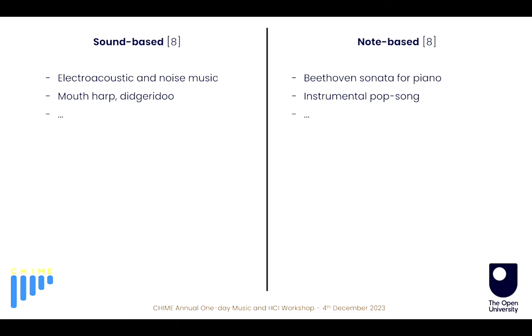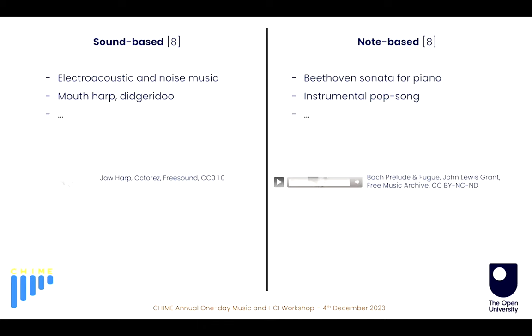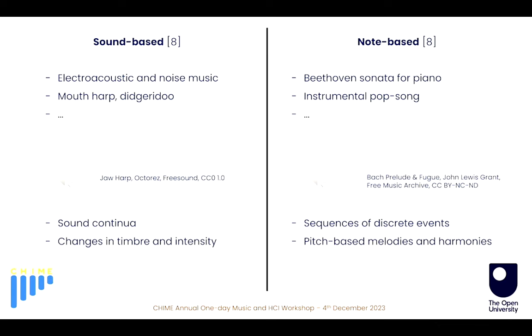Of course, it is a very broad distinction, but it's just to have some references. To have some audio examples, we can listen to some John Cage for the sound-based music, and for the note-based, you can listen to this Bach Prelude and Fugue. We can hear that the main differences are that in the sound-based, we have mainly sound continua and changes in timbre and intensity, while in note-based music we have mainly sequences of discrete events, which are notes — pitch-based melodies and harmonies.